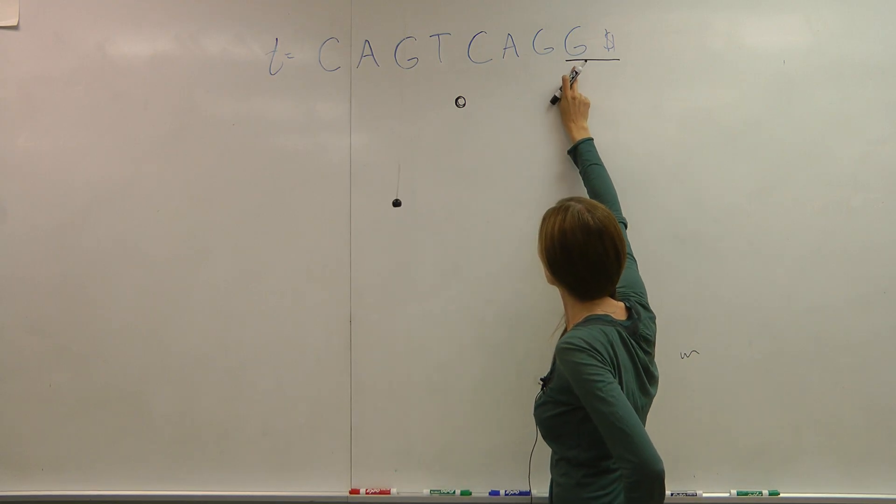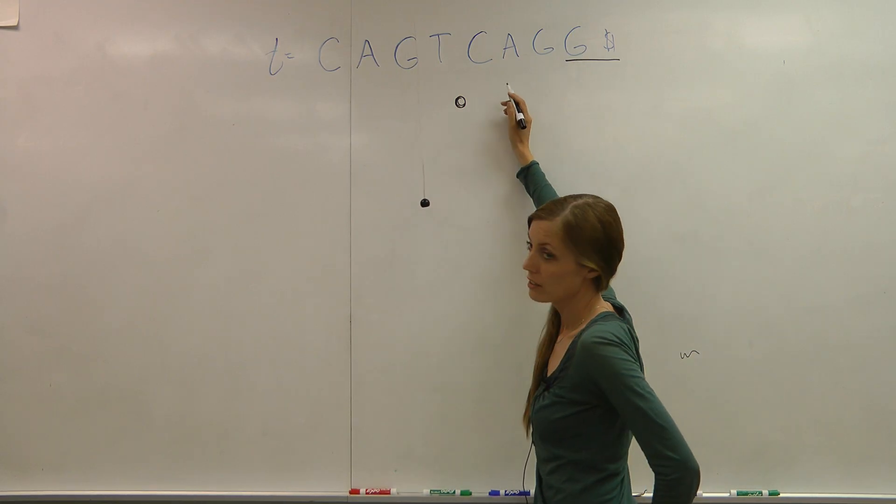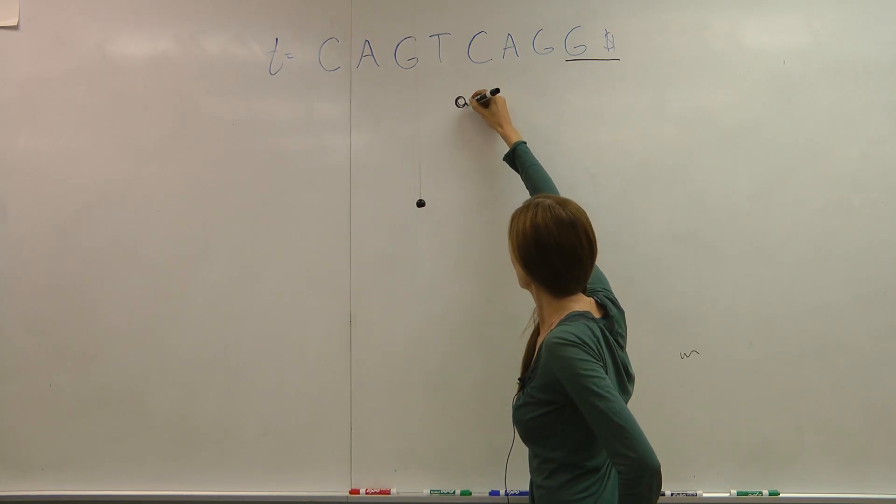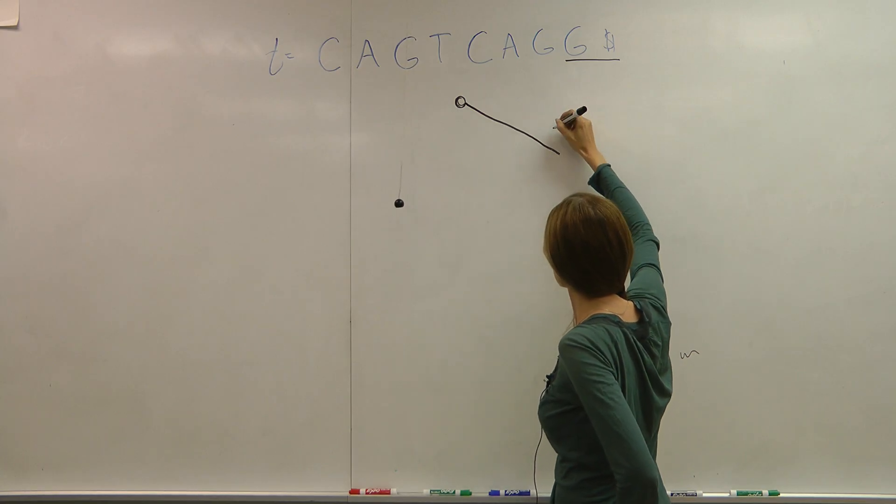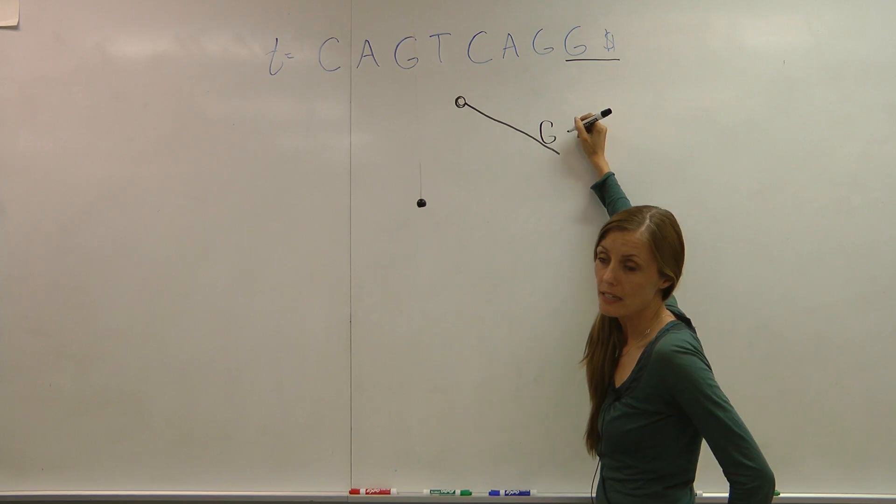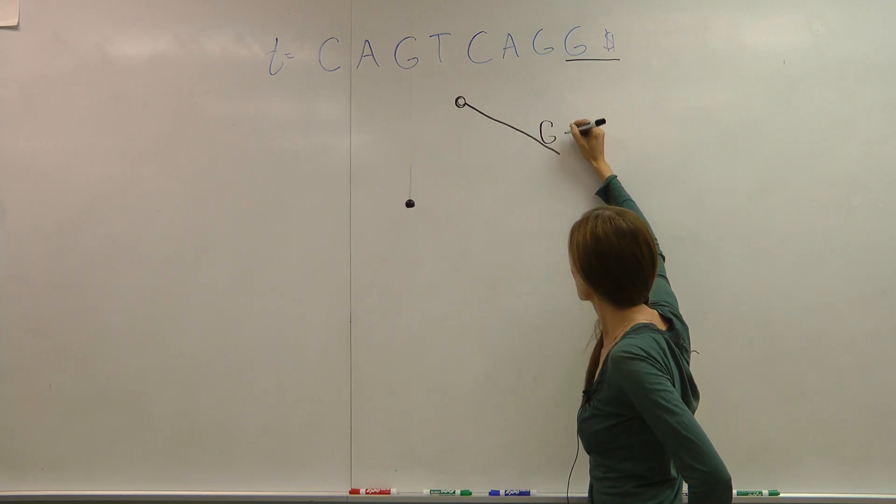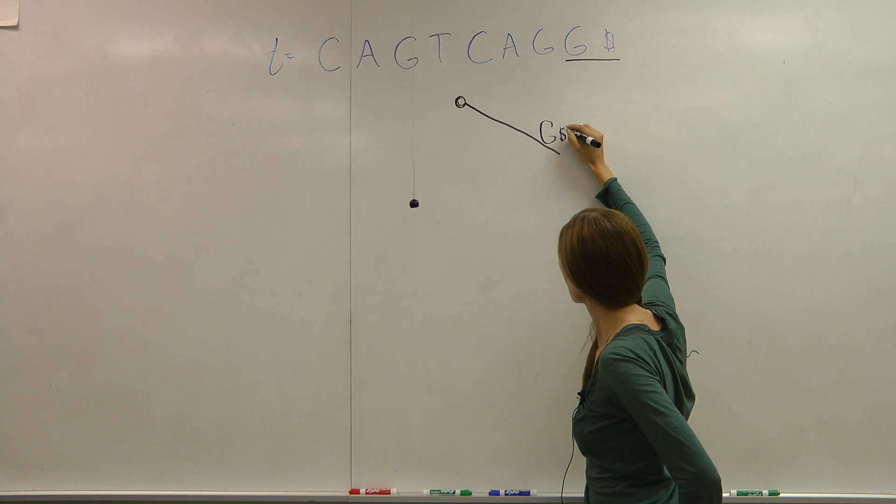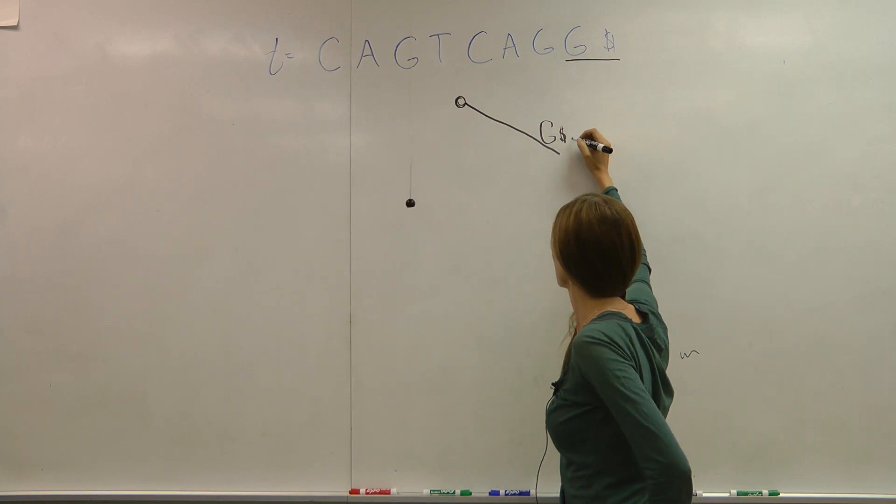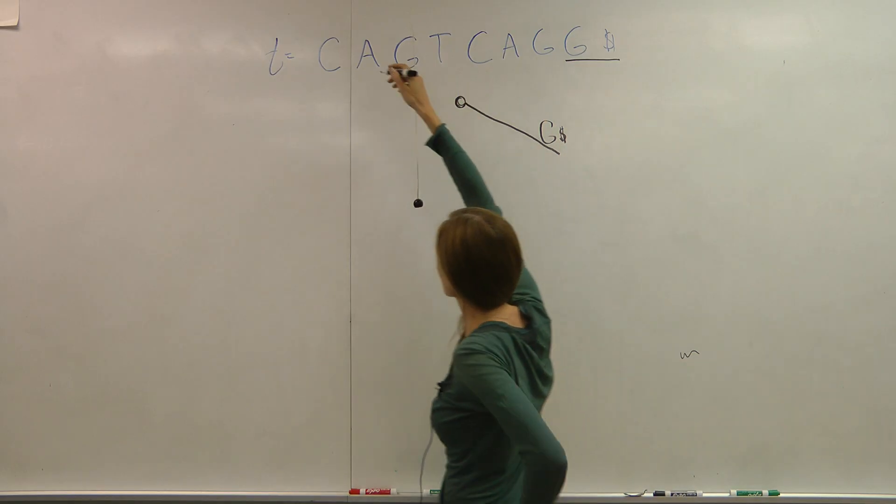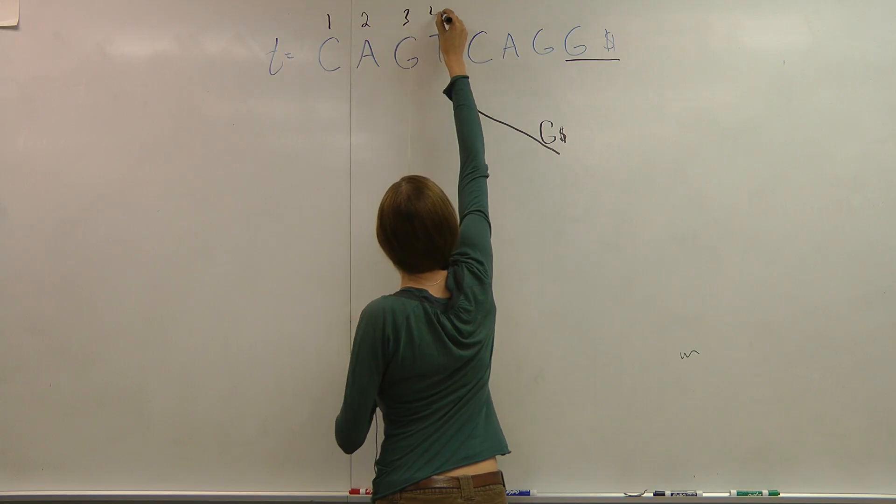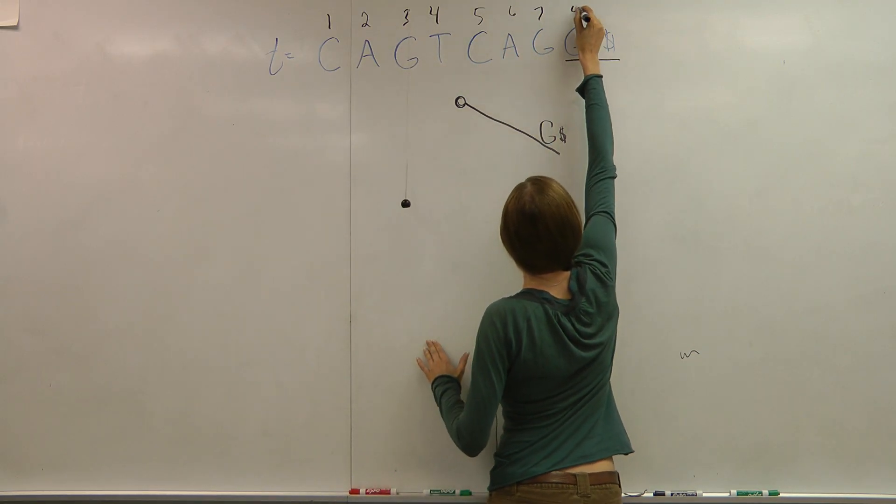So we go to our first prefix, which is G. Do we have a branch that represents G yet? No, we do not. So we can go ahead and add a G branch. And the part that makes this speedy is right now I'm going to assume that this is accurate, that G should be its own branch and it starts at index. I forgot to put my indexes here. One, two, three, four, five, six, seven, eight.